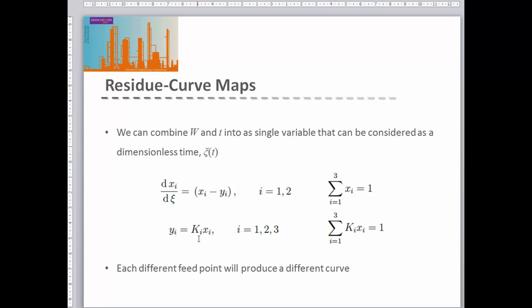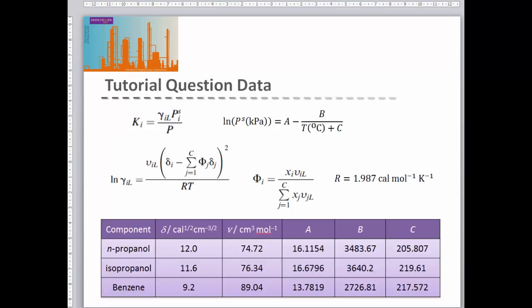What we need to do is calculate our K-value for each of our components. Our K-value is our activity coefficient times the saturated vapor pressure over the total pressure — that's Raoult's law.